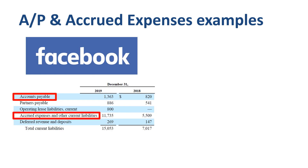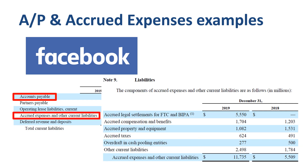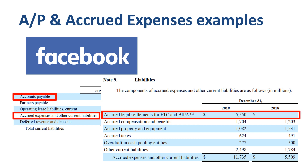Let's move over to Facebook. There is no further detail on the accounts payable balance, but lots of additional information on accrued expenses and other liabilities in Note 9 to the financial statements. This number has more than doubled year over year, from $5.5 billion to $11.7 billion. The list starts off with an unusual item: $5.55 billion of accrued legal settlements — in other words, two legal settlements agreed but not paid yet. This is explained in more detail in Note 11, legal matters.